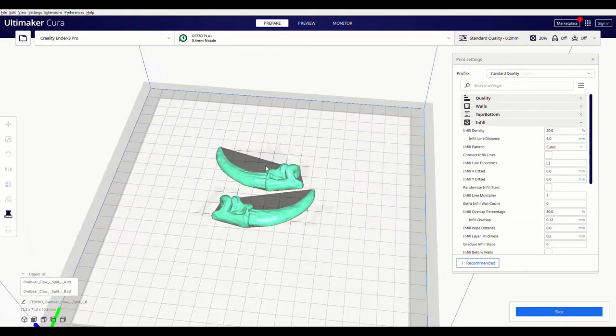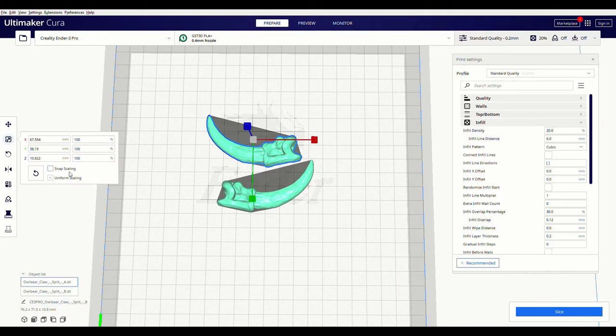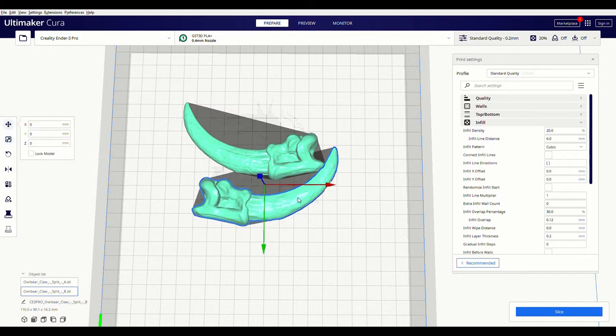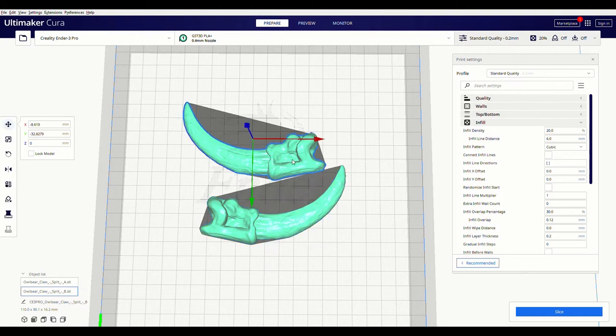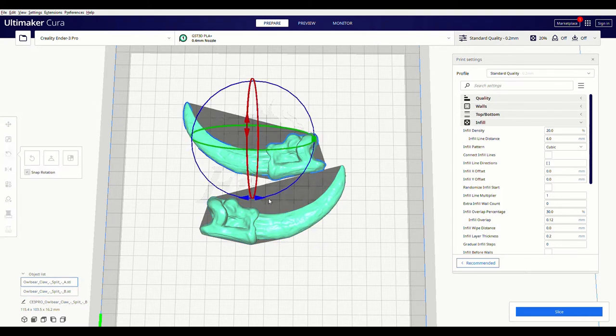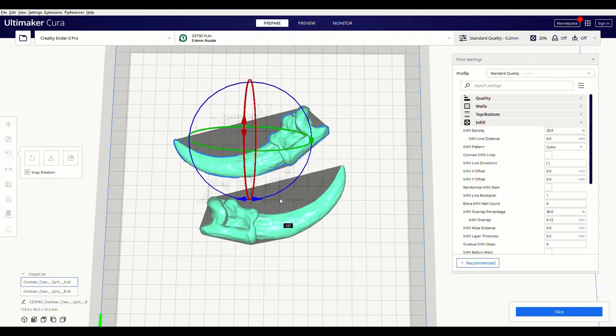I loaded up the files in my Ultimaker Cura. I right away thought they're kind of small for an owlbear or a moonkin. So I decided to increase the size by 50%. And of course then I had to move them around just a little bit, rotate, adjust the position so that they fit nicely on the building plate.